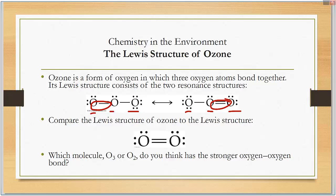Compare this structure to a regular oxygen atom which is O2. Which molecule O3 or O2 do you think would be stronger oxygen-oxygen bond? The reality is that since this is a one and a half bond and not a single and double, the double bond ends up being stronger.